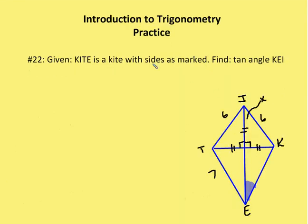Second question. Given kite KITE is a kite with sides as marked, find the tangent of angle KEI. I know that I have two 45-45-90 triangles. I have a right triangle here—we know that the diagonals of a kite are perpendicular to each other.